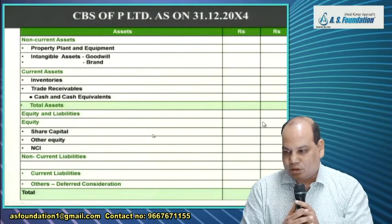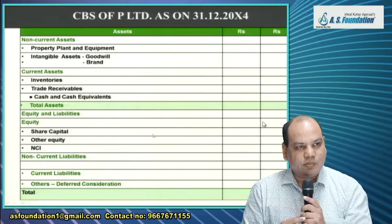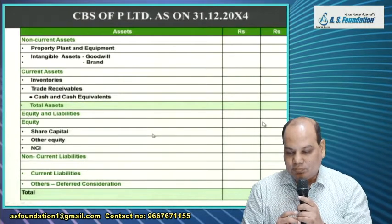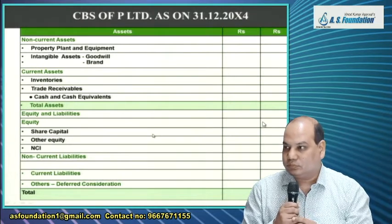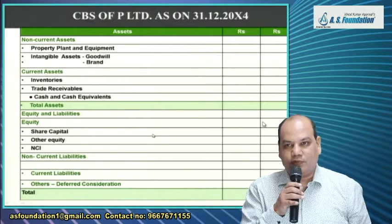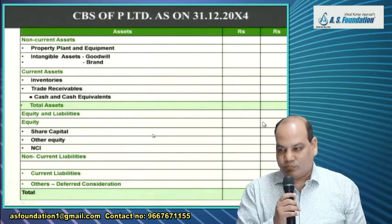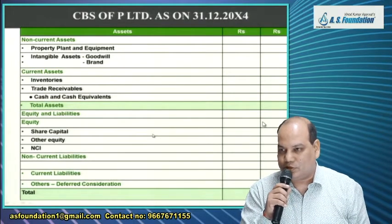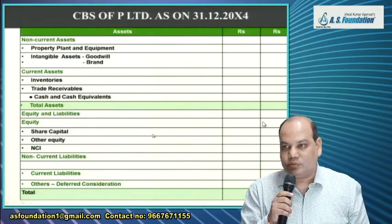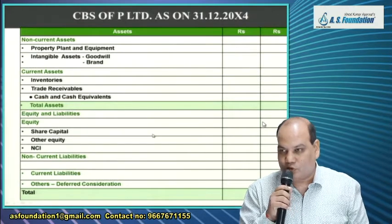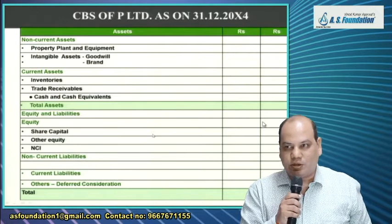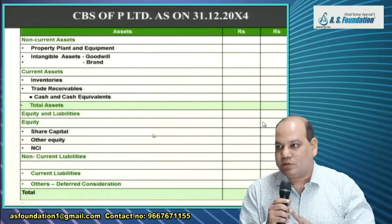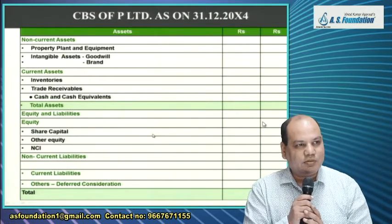On screen is the consolidated balance sheet format. One new item will appear this time — 'Brand' under the head 'Intangible Assets.' Write: Consolidated Balance Sheet of P Limited as on 31-12-2014. All figures are in Rs. thousands because the given balance sheet is in thousands. Under Assets: Non-current assets — (a) PPE, (b) Intangible assets: Goodwill and Brand. Under Current assets: (a) Inventories, (b) Trade receivables, (c) Cash and Cash equivalents. Under Equity and Liabilities: Equity — Share capital, Other equity, Non-controlling interest; Non-current liabilities; Current liabilities.